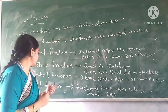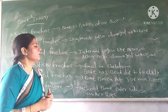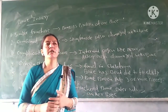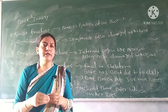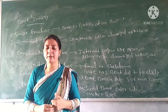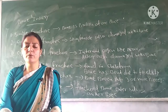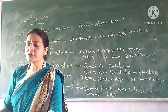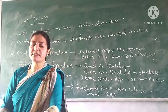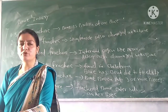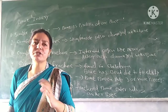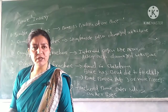The last type is an impacted fracture, where the fractured bone is driven into another bone. Moving to the third type of sports injury — joint injuries. For example, your hip joint, shoulder joint, or wrist joint can be dislocated. We call these joint injuries.